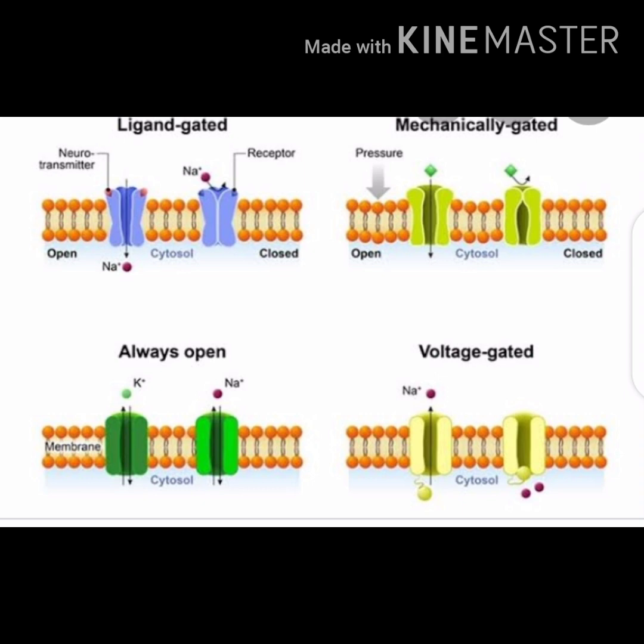The next type is mechano-gated — here, no extracellular neurotransmitters or molecules are involved. Instead, physical stretching of the membrane opens the gate, allowing ions to move into the intracellular region; when released, the gate closes again. Another type is always-open channels, where the pore remains permanently open, allowing only specific ions to cross. In voltage-gated channels, variations in voltage potential across the membrane open the channel, allowing sodium or potassium ions to pass; when balance is restored, the channel closes.